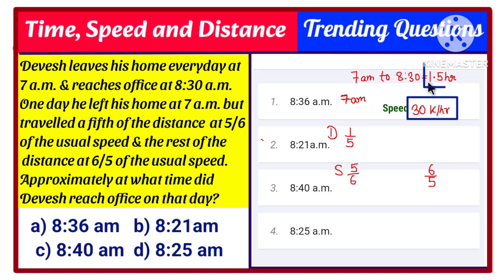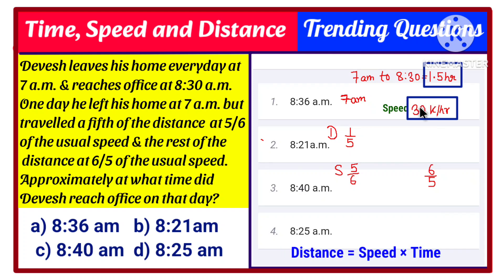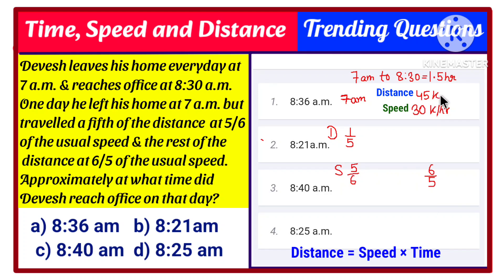If the original speed is 30 km/h and he normally takes 1 hour 30 minutes to travel, we can calculate the original distance using the formula: distance = speed × time. Multiplying 30 by 1.5 gives us 45 km. So the original distance is 45 km and the original speed is 30 km/h.